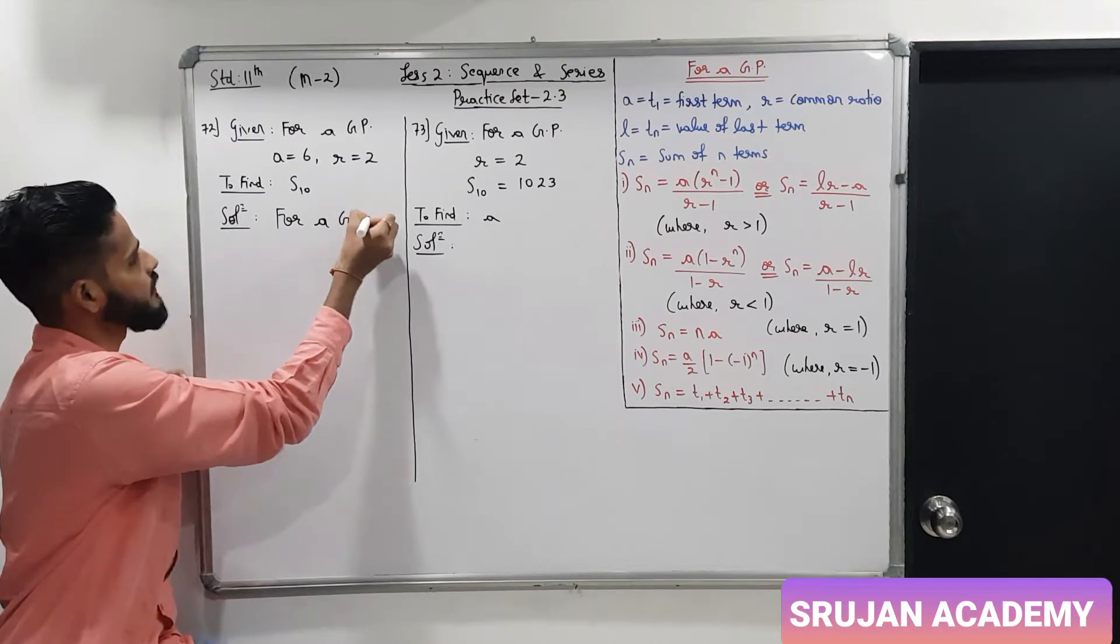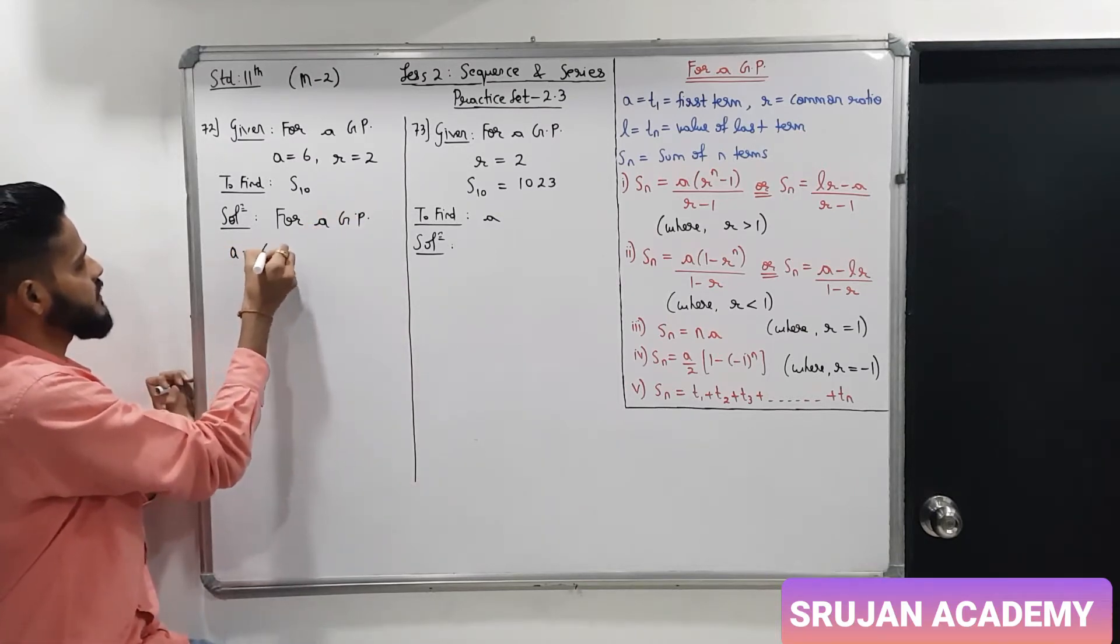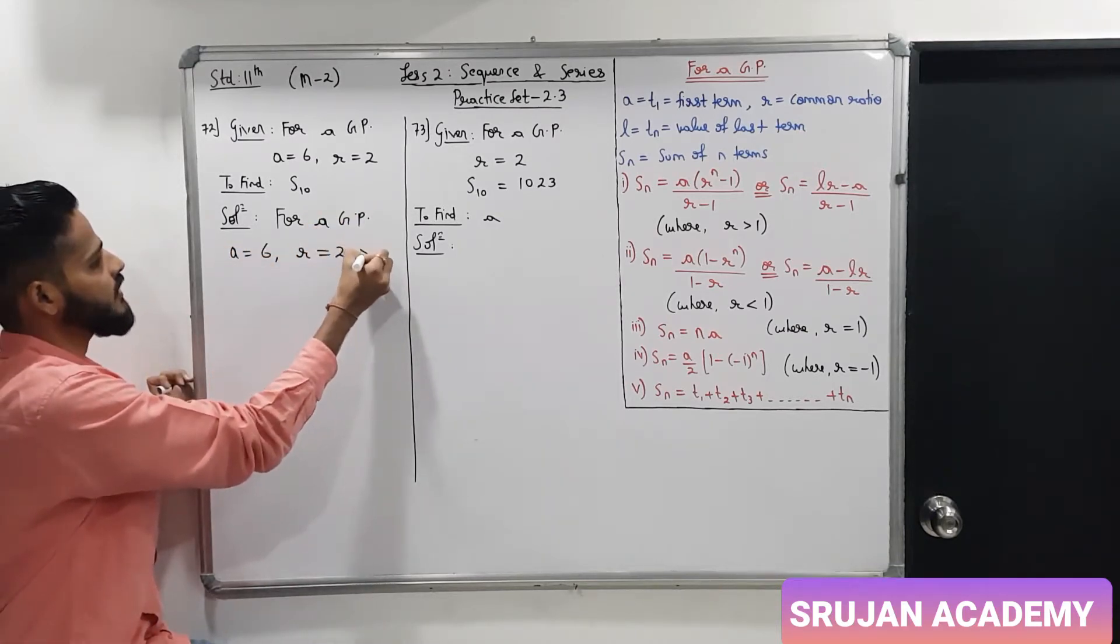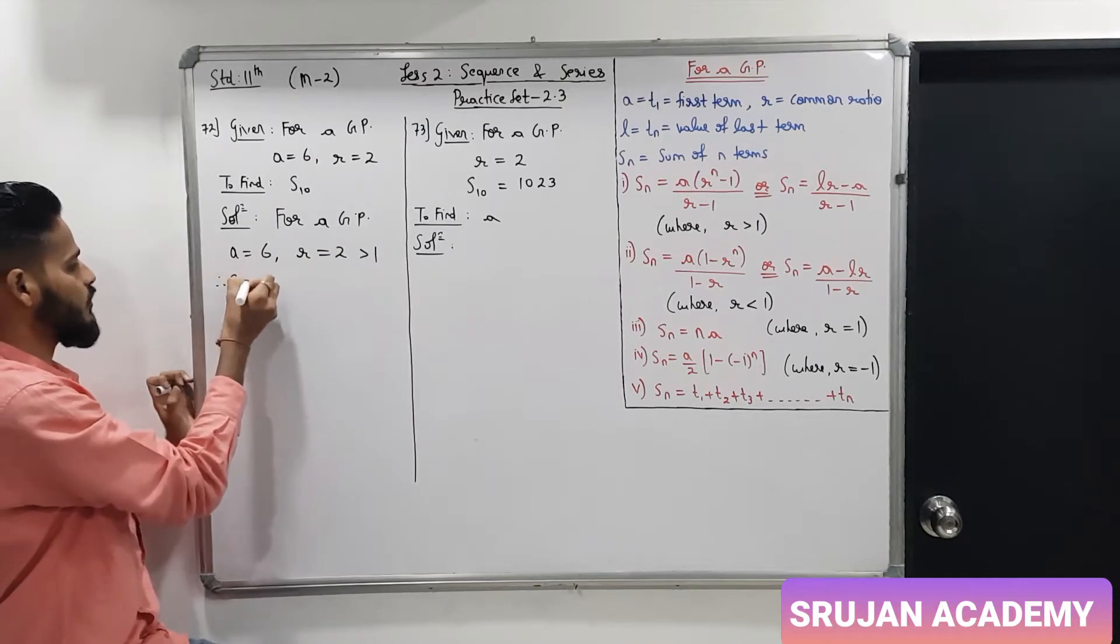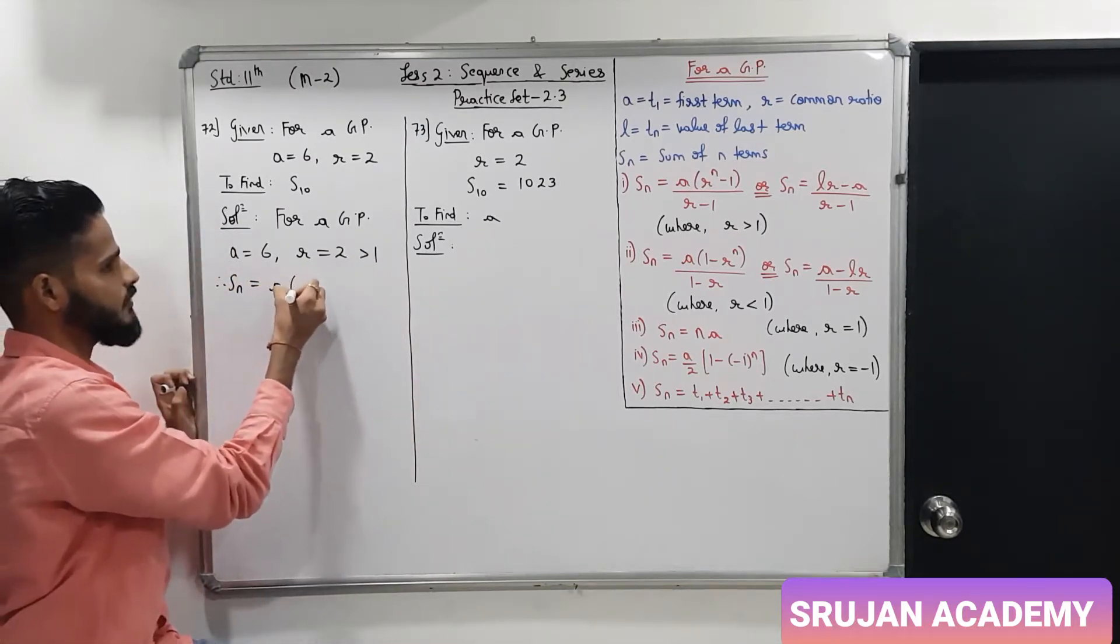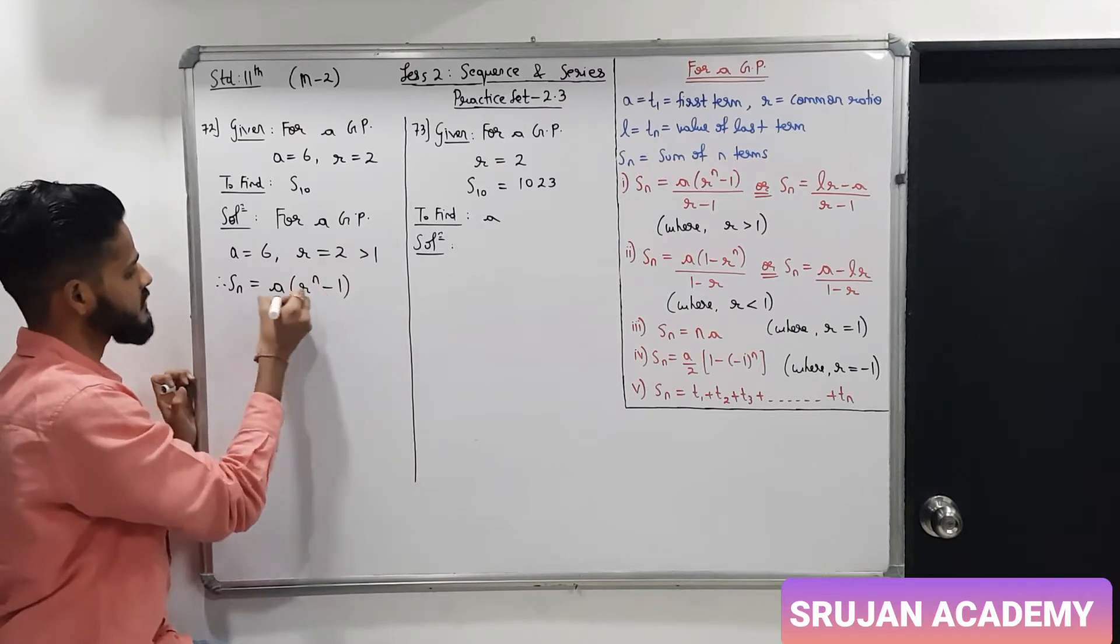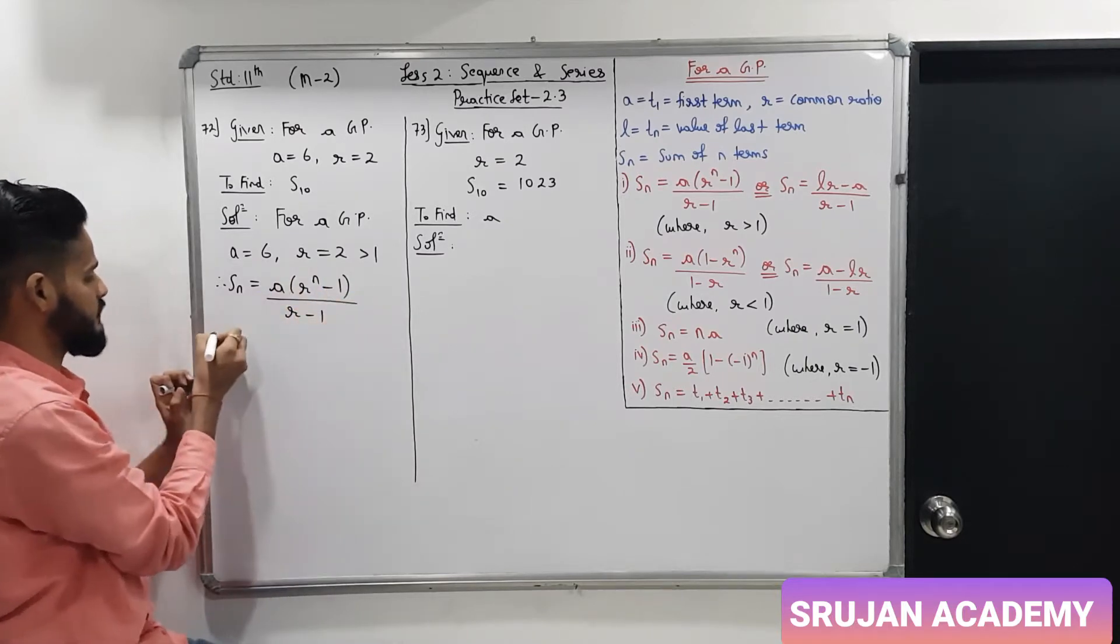For a GP, a is 6, R is 2, greater than 1. So, Sn is equal to a into R raise to n minus 1 upon R minus 1.